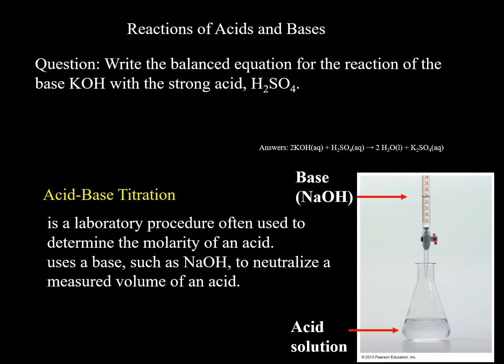In this lab, you're going to titrate acetic acid as the acid. The goal is to find the concentration of this acid — that's the purpose of the titration. In the burette, you'll add a base, NaOH, and add it to the acid until you observe a permanent light pink color, which tells us the amount of acid equals the amount of base.